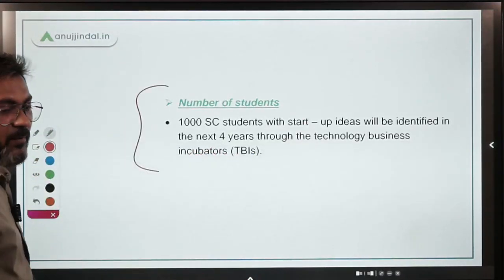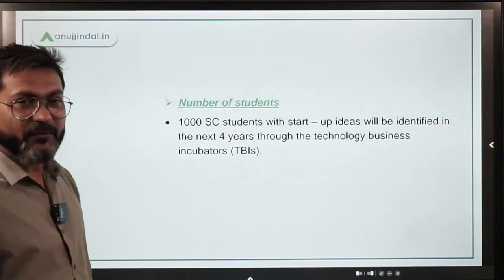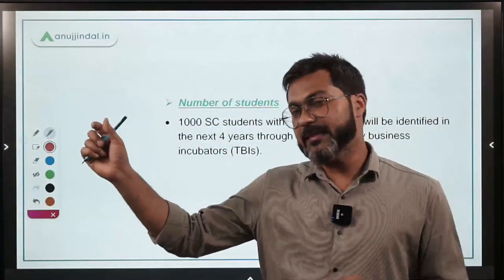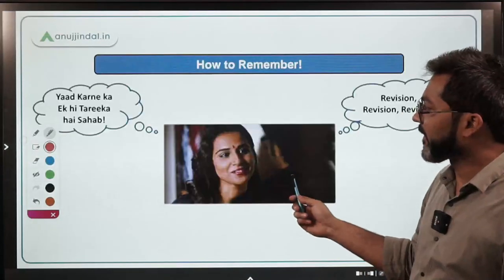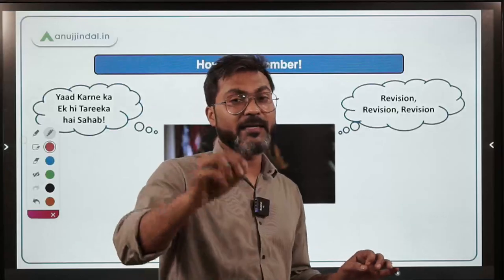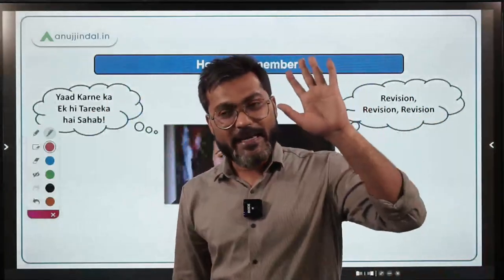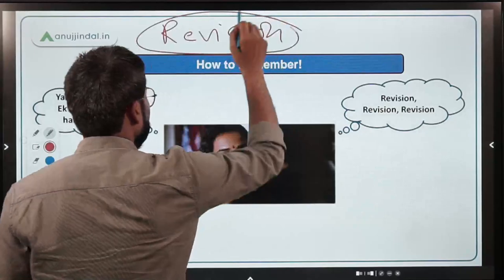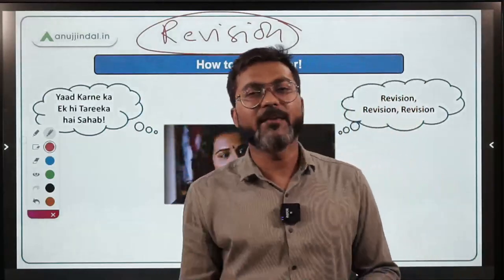Things like the number of beneficiaries — you have to remember those; there's no short trick for that. So this is how you divide a government scheme into the effortless part and the part to remember. And finally, as I mentioned before — I'm not going to give you a magic wand. There is only one way: repetition, repetition, and revision. That is the only way to remember any fact, whether it's current affairs or government schemes — keep reading it again and again.